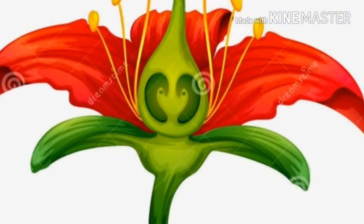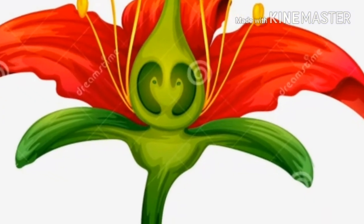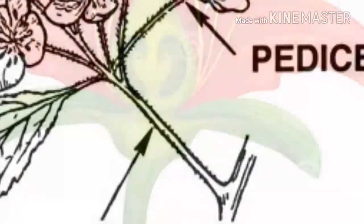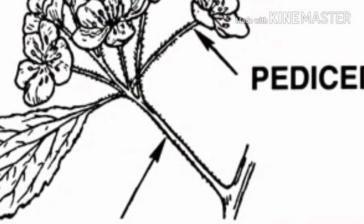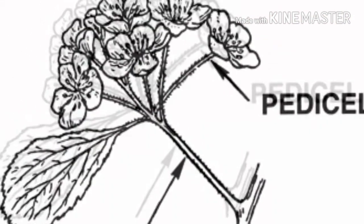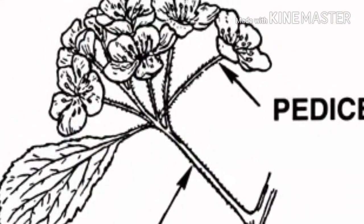The filament supports the anther. Finally, the peduncle is the stem which supports the inflorescence.